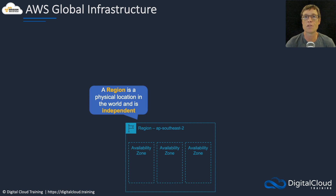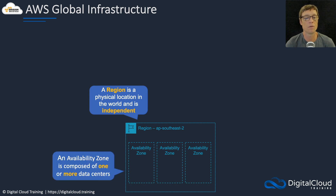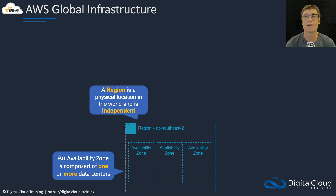Within a region we then have availability zones. Availability zones are composed of one or more data centers — you can essentially think of these as a cluster of data centers.